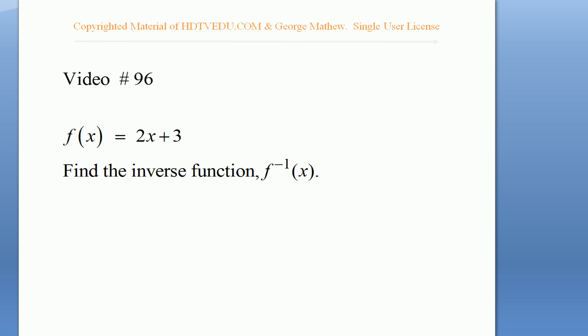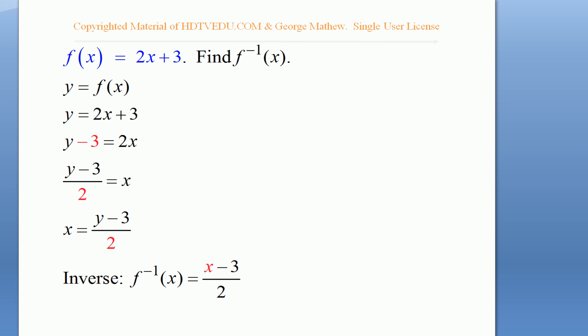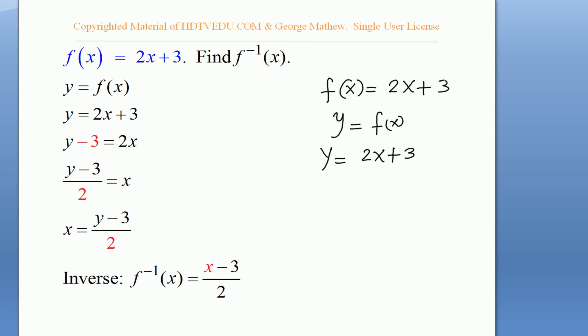We are given the function f(x) = 2x + 3. Find the inverse function. So let us write: f(x) = 2x + 3, which means y = f(x), so we get y = 2x + 3. Subtract 3 from both sides — where are we headed with this? We are trying to solve for x in terms of y.